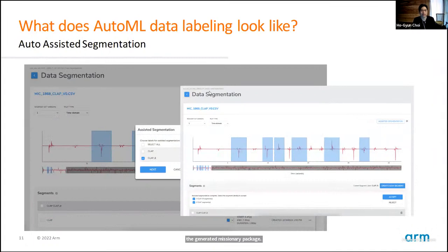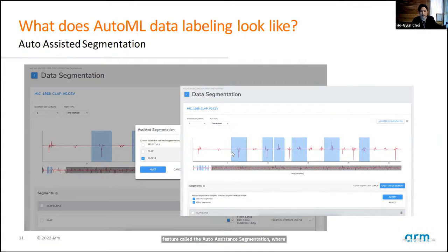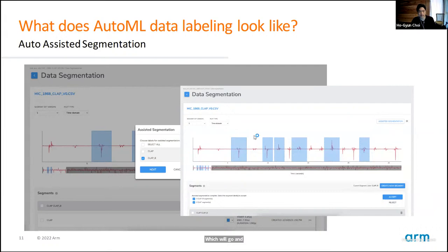What does AutoML data labeling look like? There's a data segmentation editor where you can manually segment different time series data — for example, segmenting different types of claps like Clap A and Clap B. A recently added feature called auto-assisted segmentation lets you manually segment one example, then click the assisted segmentation button to automatically find all similar segments throughout the dataset. This saves a lot of time during the segmentation process.